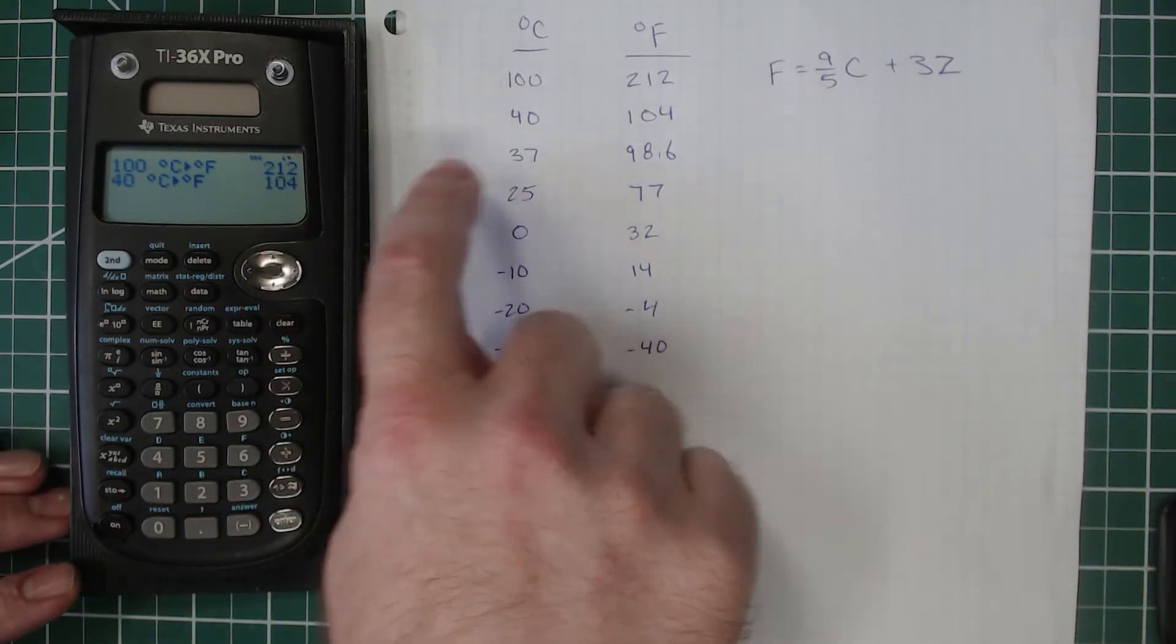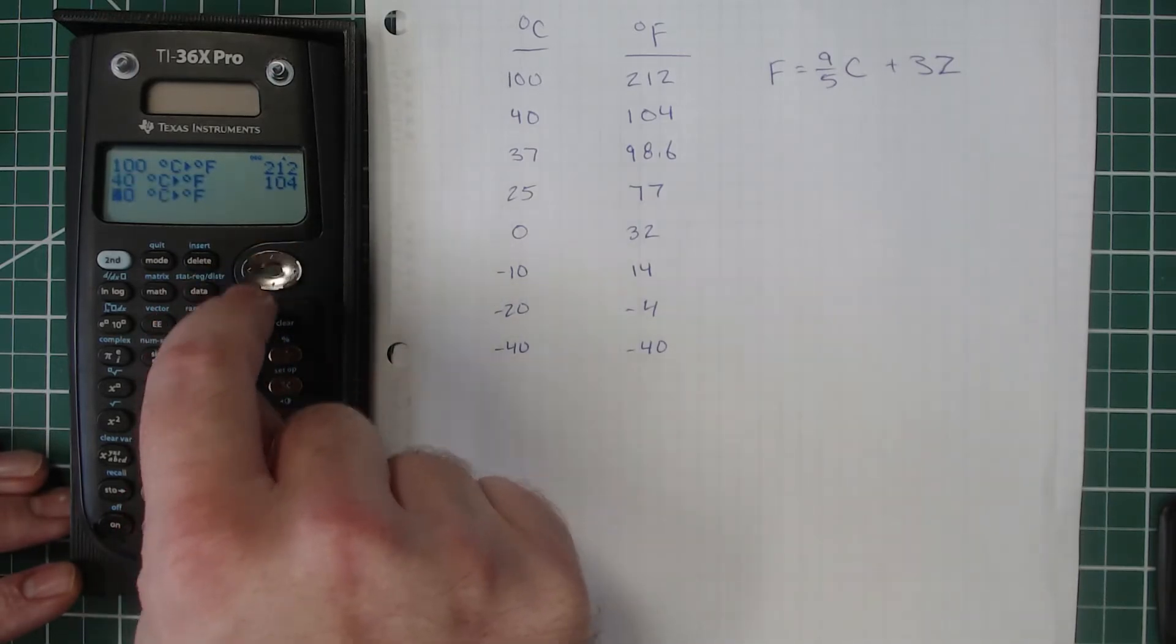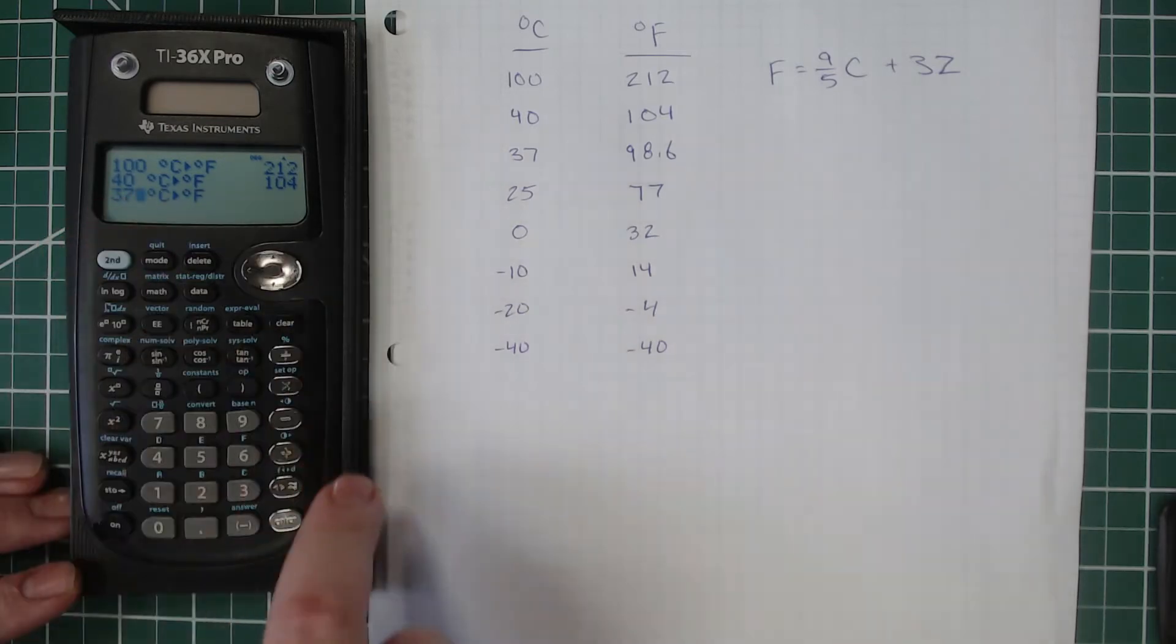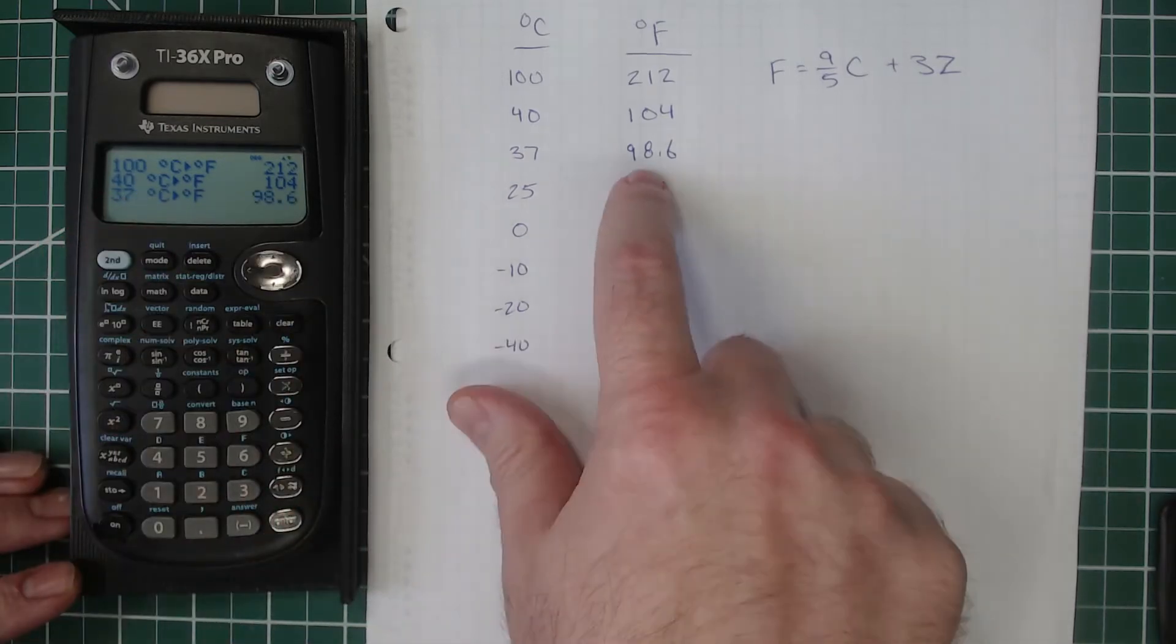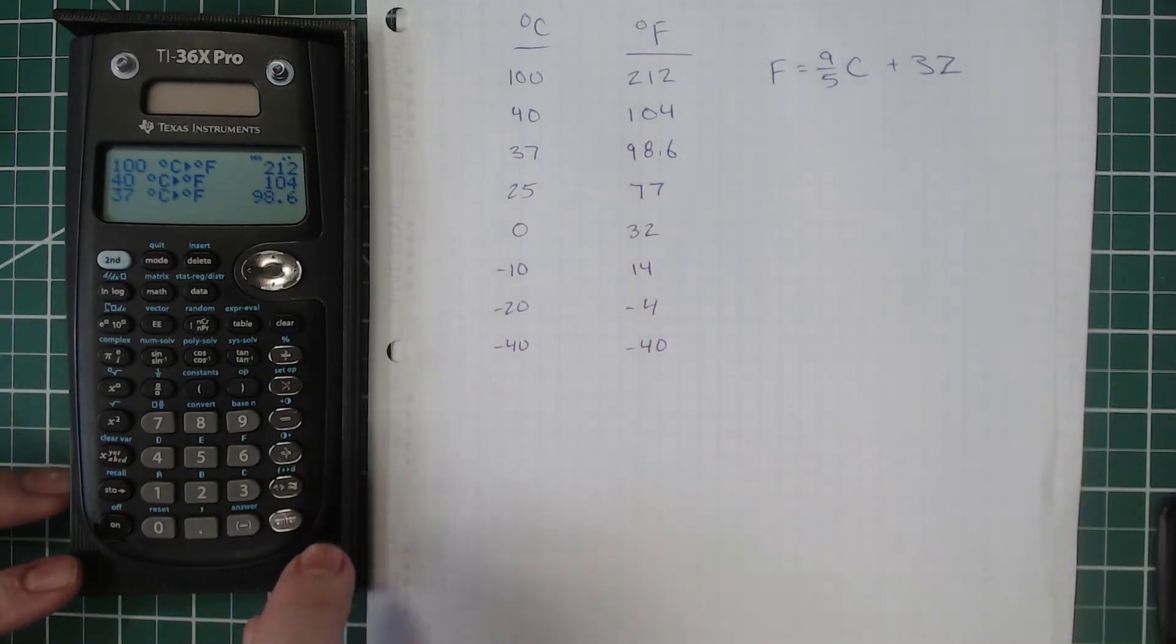Let's do another one. This is average body temperature. Thirty-seven degrees Celsius comes out to 98.6 degrees Fahrenheit. So normal average body temperature.